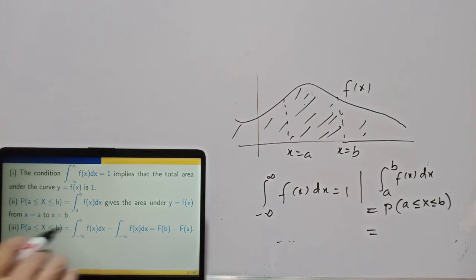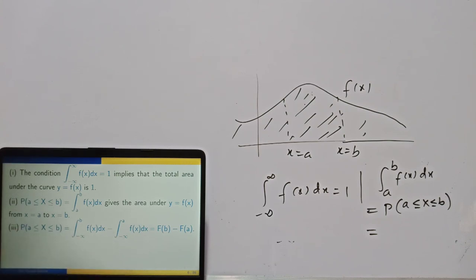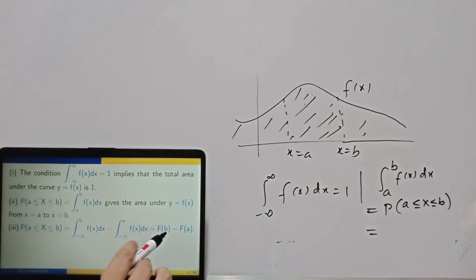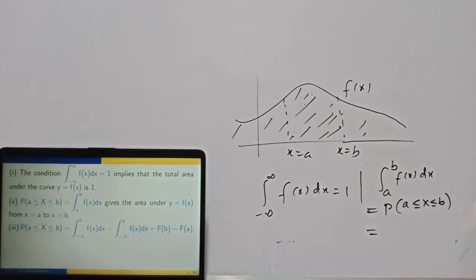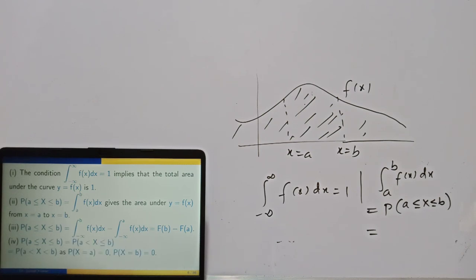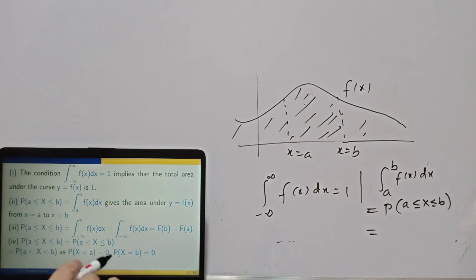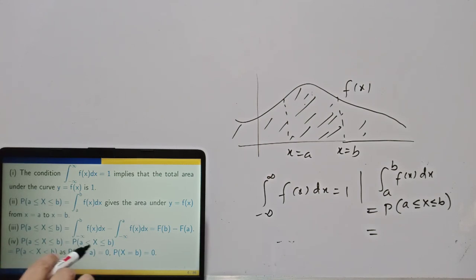Using properties of integrals, the probability of x in [a, b] can be written as F(b) minus F(a), where F is the CDF. This is a very useful property used in several distributions. Since the variable is continuous and the probability for a particular value is zero, it does not matter whether you include the endpoints or not — the probability remains the same.